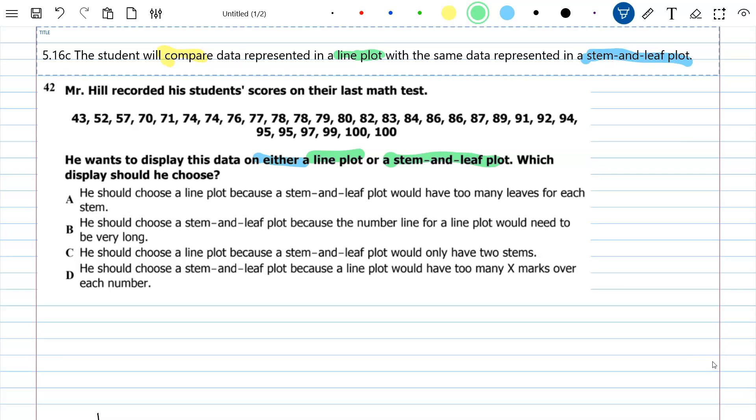A. He should choose a line plot because a stem and leaf plot would have too many leaves for each stem. Well, that's actually not true. I don't mind if I have a few leaves as long as it doesn't get out of control. But let's go ahead and keep going here. I don't think there's a problem with A. Let's cross that out. I don't think that's true.